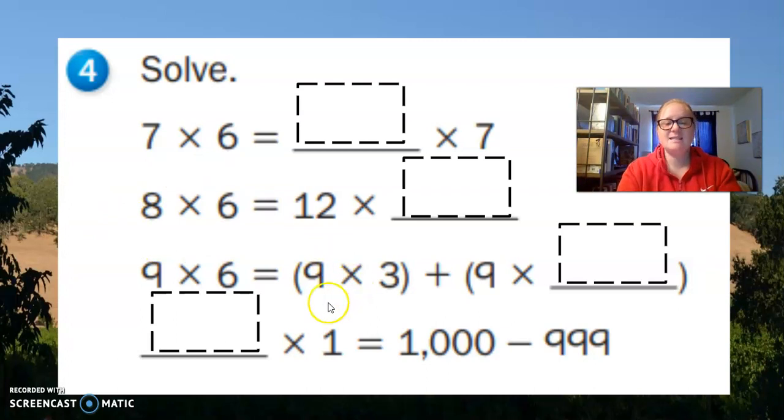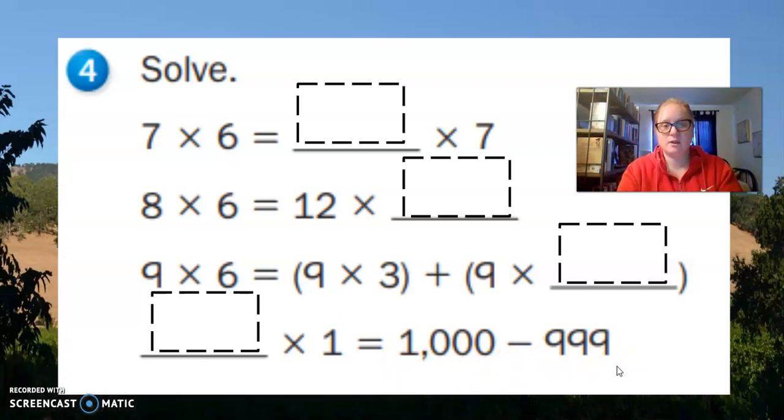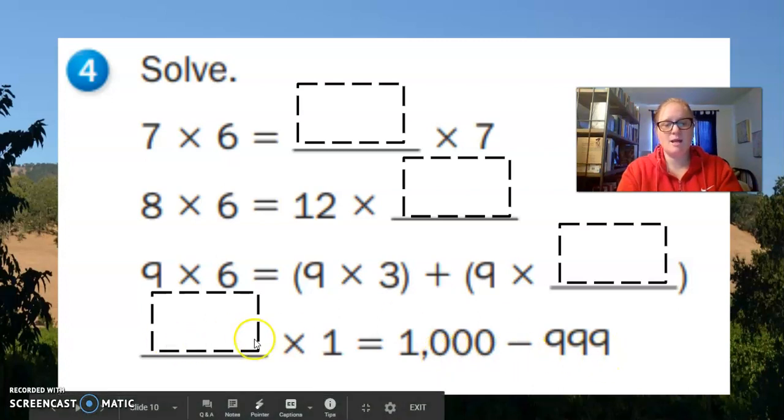Now, this one's really fun. This is where you're kind of doing your doubling, right? So we have 9 × 3 + 9 × mmm = 9 × 6. So the doubling rule is what I'm kind of giving you a hint on for this one. The last one is what × 1 = 1,000 − 999. Now, to solve this, I would do 1,000 − 999 first. Do this first. What × 1 equals that answer?